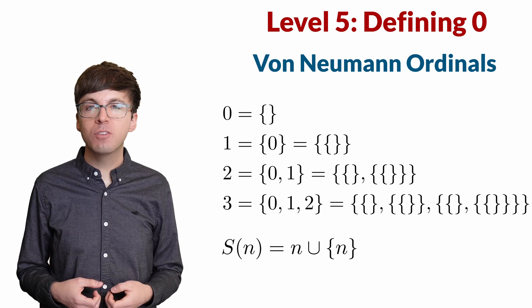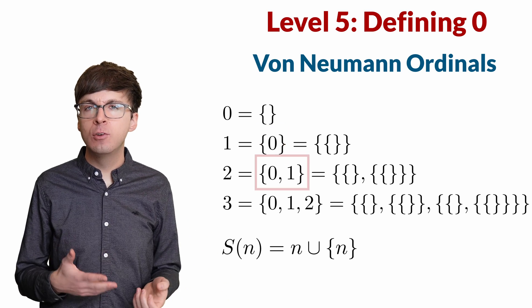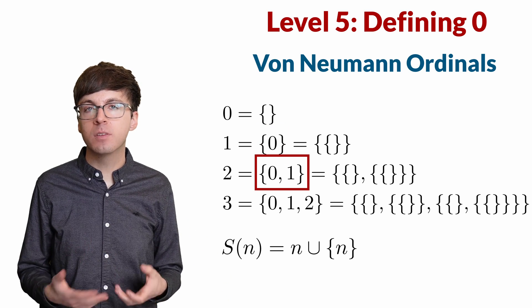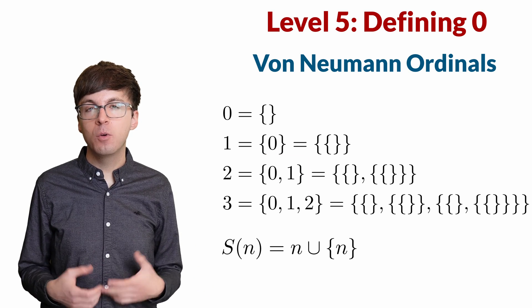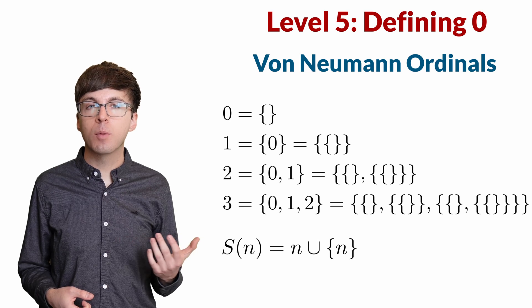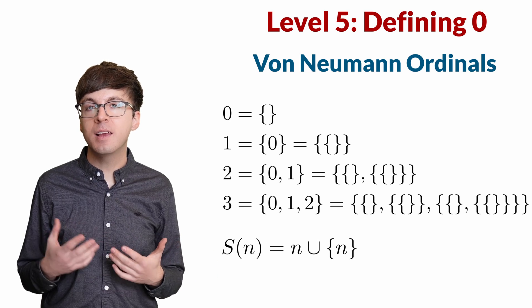With this definition, one is the set that contains one element, two is the set that contains two elements, and so on. And zero is the empty set, which captures the idea of zero representing emptiness or containing nothing.